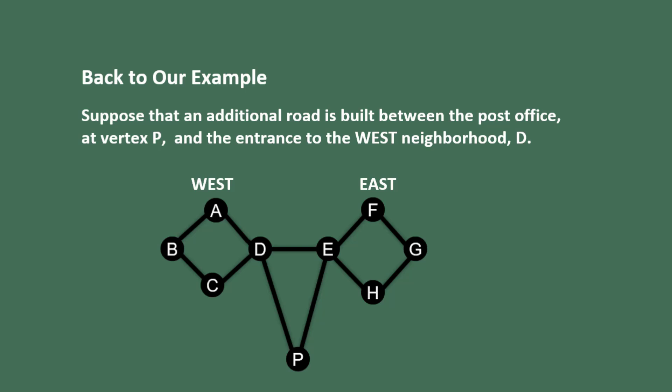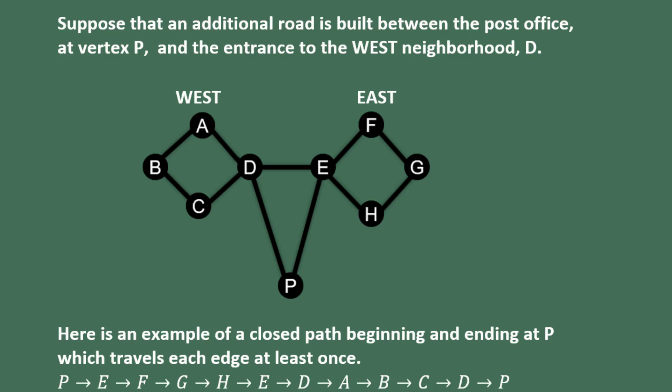So let's get back to our example. Suppose that an additional road is built between the post office at vertex P and the entrance to the west neighborhood D. Here's an example of a closed path beginning and ending at P which travels each edge at least once.